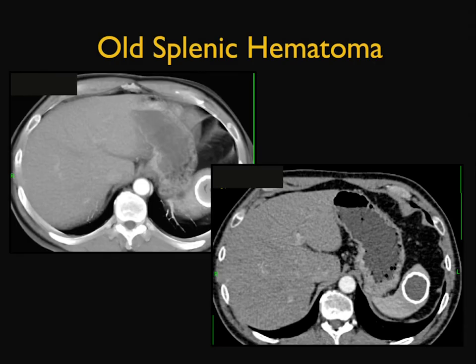When you see calcification of a splenic lesion, it's mostly due to old hematomas. In theory, sarcomas can have calcification, but that's spotty or irregular calcification — rim-like calcification. Anywhere I see that, I'm always thinking about old hematomas.